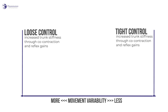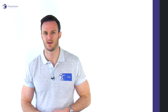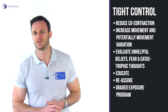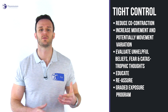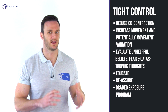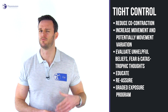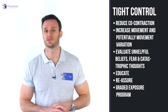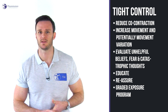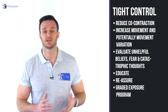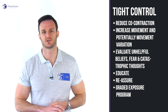Looking at these two phenotypes, it seems logical that different interventions are likely to be required to address these different presentations of changes in motor control. For the tight group, the targets for intervention should be to reduce co-contraction, increase movement, and potentially movement variation. In case of movement avoidance, it makes sense to evaluate unhelpful beliefs, fear, and catastrophic thoughts, and to tackle them by education, reassurance, and a graded exposure program.